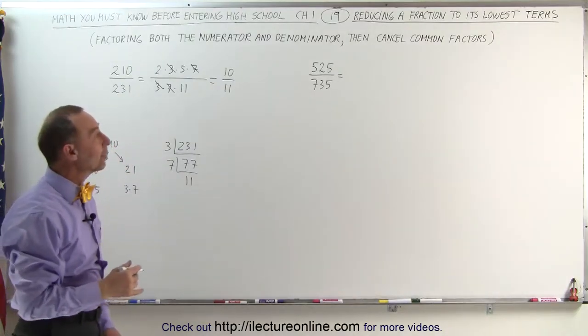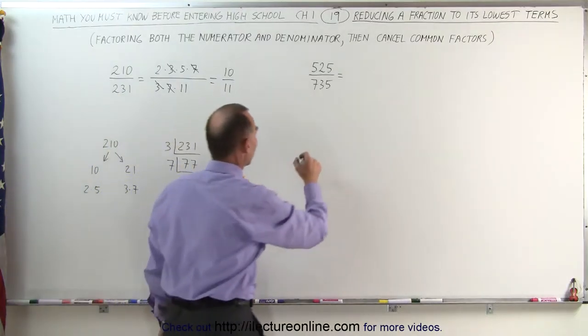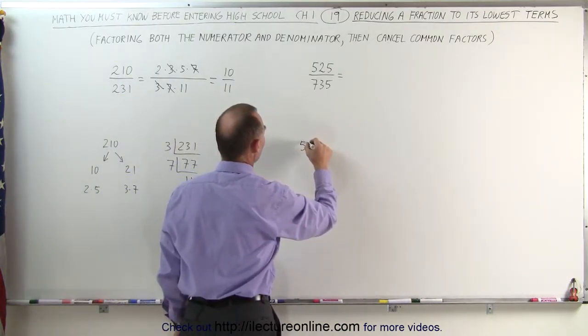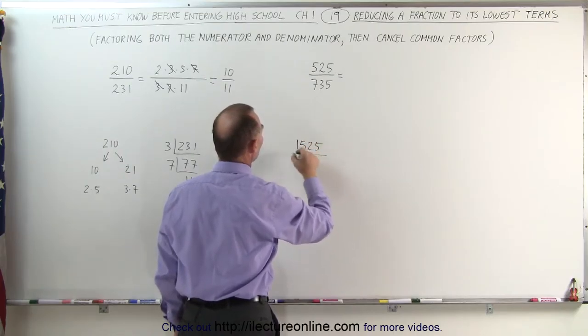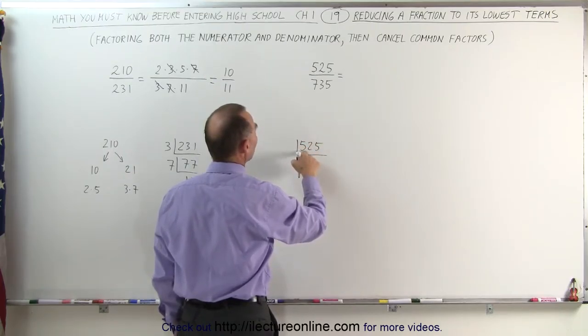The next fraction, again, we can do the same thing. We can take the numerator and find all of its factors. First, we can divide this by, let's see here, if we add these together.